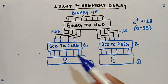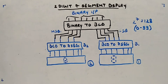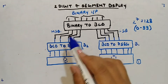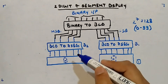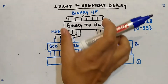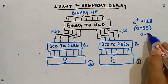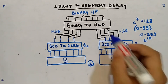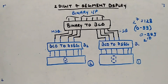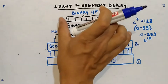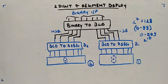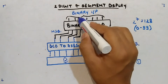For three digits, four BCD inputs will be given per display — total 12 outputs. To represent 0 to 999, you need 2 to the power 10, so 10 binary input bits. Inputs will be 10 and outputs will be 12. That is how you can extend the design.